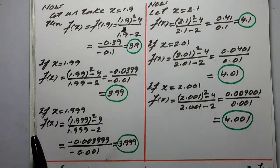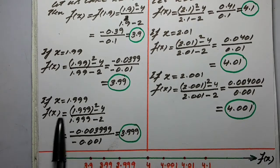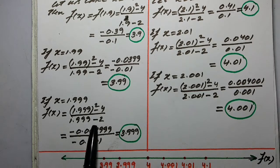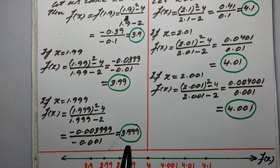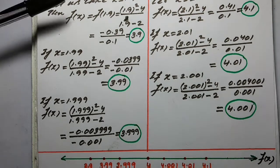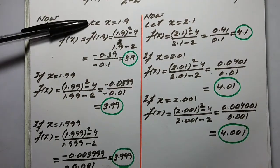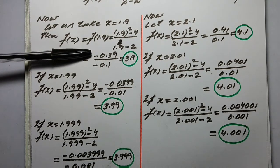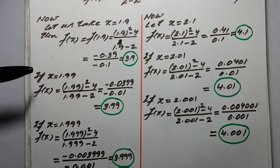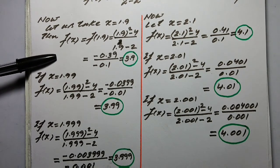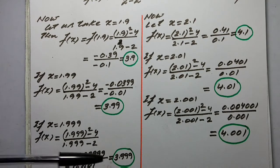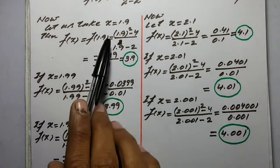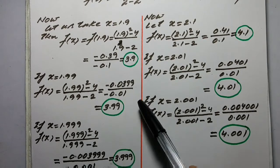Now we take x equal to 1.999. f(1.999) is equal to 1.999 squared minus 4 upon 1.999 minus 2, which is equal to minus 0.003999 upon minus 0.001, so we get 3.999. We can see that if we go closer to 2 from the left-hand side — moving from 1.9 closer and closer — the value of f(x) goes closer and closer to 4: 3.9, 3.99, 3.999. So if the value of x tends to 2, the value of the function tends to 4.